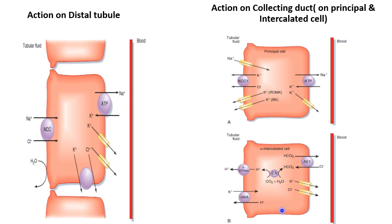The depletion of potassium stimulates hydrogen-potassium ATPase activity, so potassium is again reabsorbed and in turn hydrogen ions are secreted into the luminal surface.